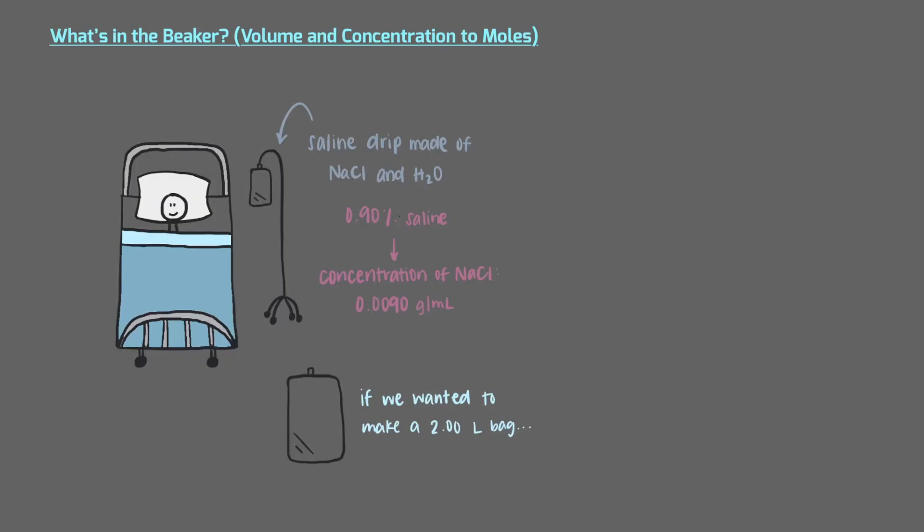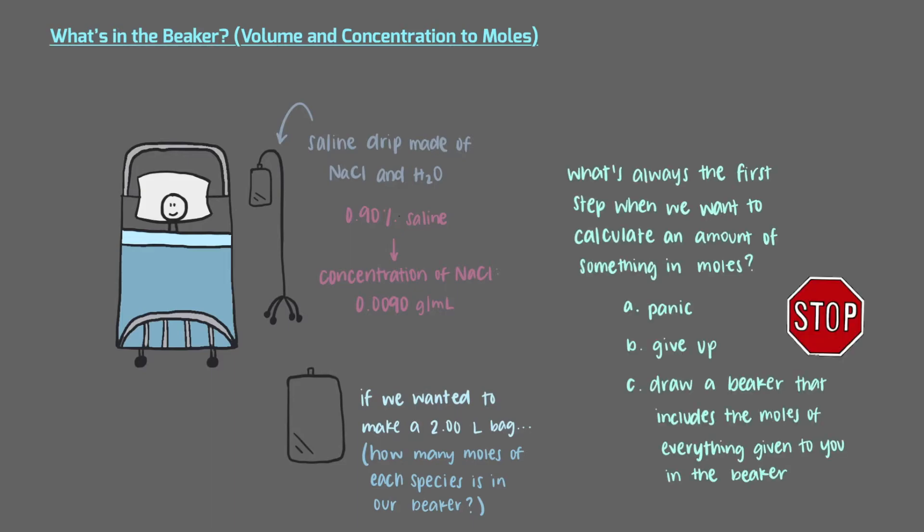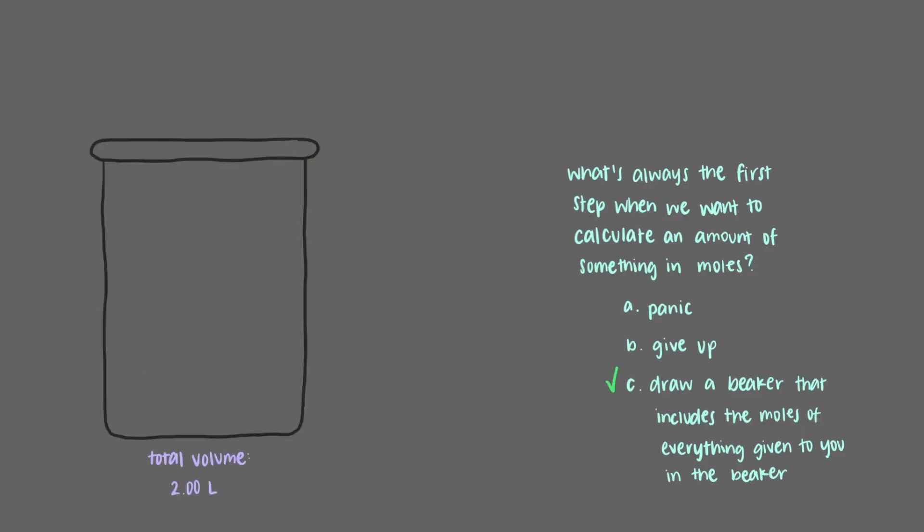If we wanted to make a 2-liter IV bag... As we know, like all problems, our first step needs to be to determine the number of moles of each chemical species in our beaker. Let's take this problem step by step. What's always the first step when we want to calculate an amount of something in moles? That's right, we always draw a beaker first and we need the number of moles of solute. We know that the concentration is 0.0090 grams per milliliter.